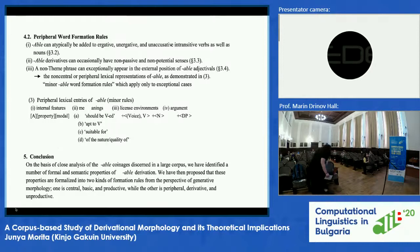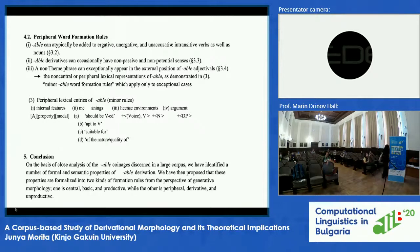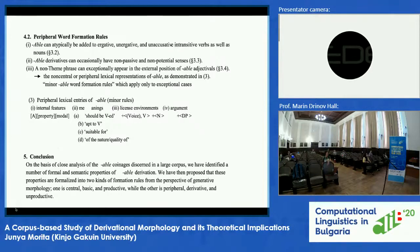Section five: conclusion. On the basis of close analysis of -able occurrences discerned in a large corpus, we have disclosed a number of formal and semantic properties of -able derivation. We have then proposed that these properties are formalized into two kinds of formation rules from the perspective of general morphology: one is central, basic, and productive, while the other is peripheral, derivative, and non-productive.